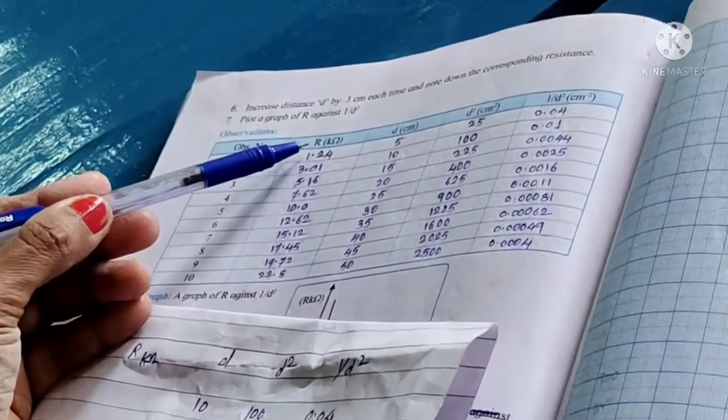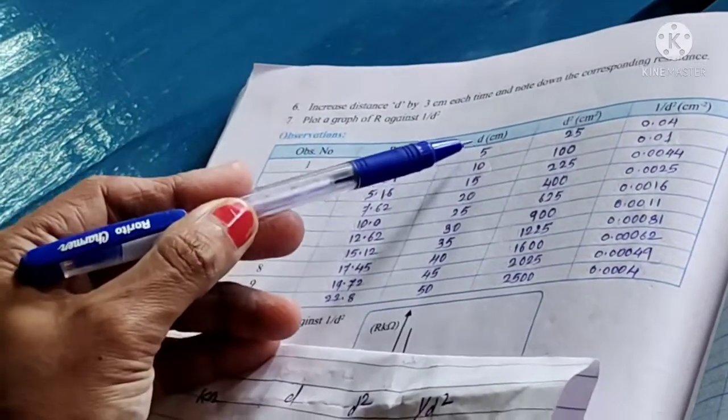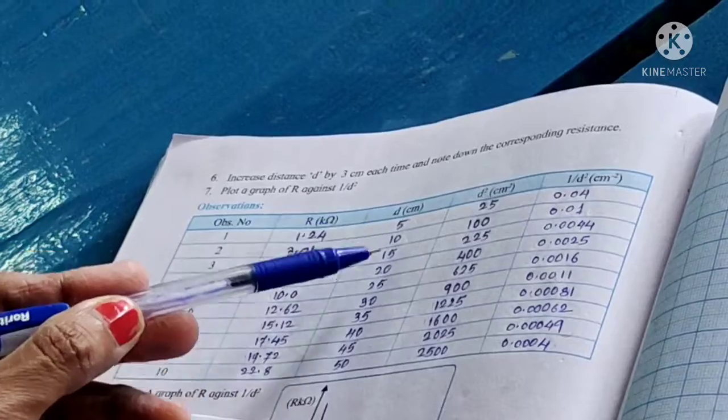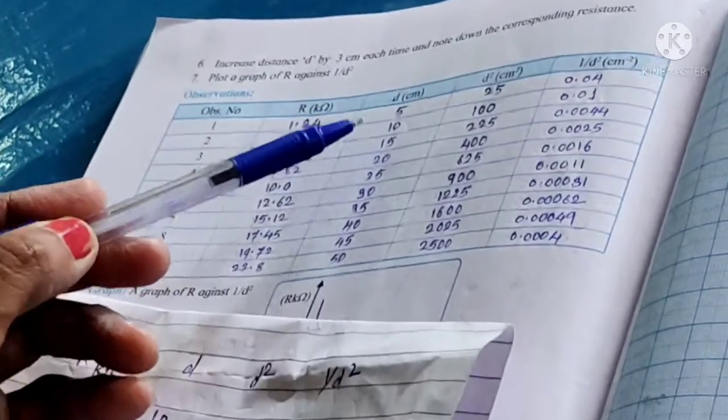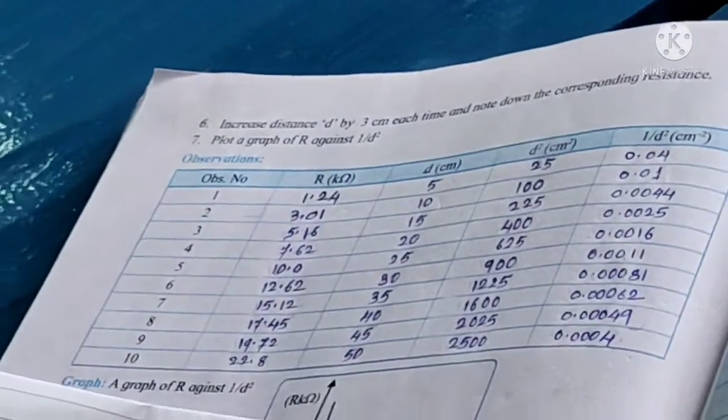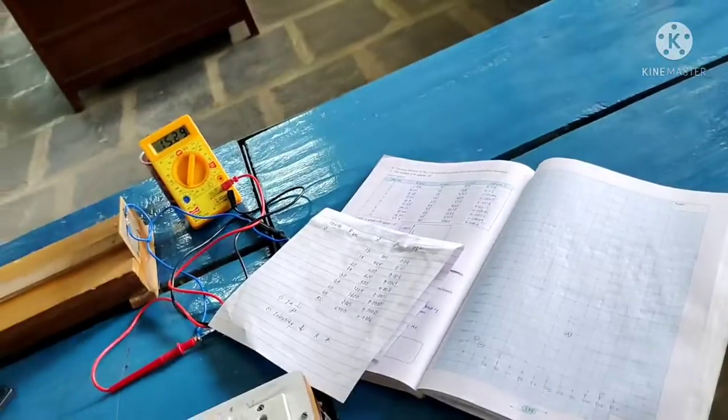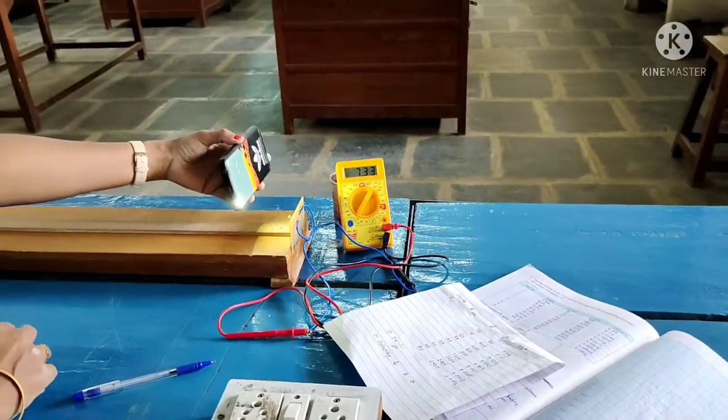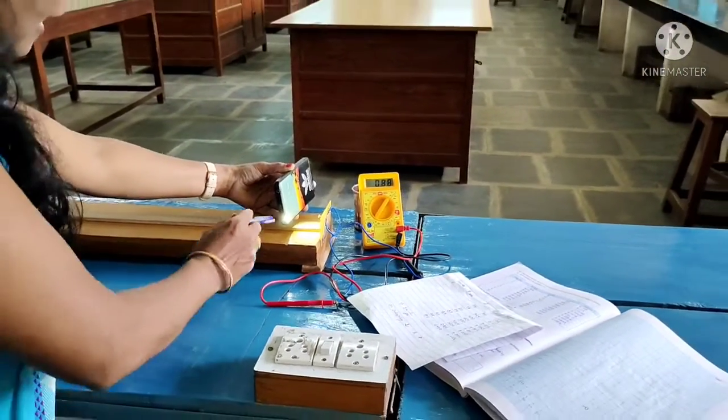Then here, first of all, according to this observation table, different observations you have to note down for different resistances. You have to change the distances for 5, 10, 15 centimeter and note down corresponding resistances in this digital meter.